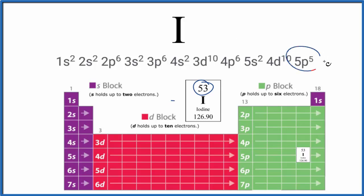And we know it ends in 5p⁵ because we come down here to the fifth row, the fifth period. We go across 5p¹, 2, 3, 4. There's iodine. So we know we stop at 5p⁵.